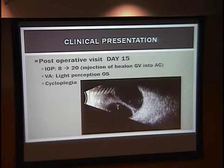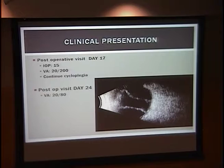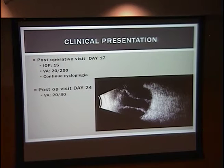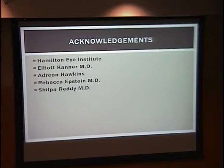On postoperative day nine, he was taken back for repeat drainage from the same sclerotomy sites. His IOP was 10 after injection of Healon into the anterior chamber, and visual acuity improved to 20/400. On postoperative day 15, he was light perception and his B-scan looked worse, so Healon GV was injected into the anterior chamber, bringing pressure from 8 to 20. On postoperative day 17, IOP improved to 15 and visual acuity improved to 20/200. By postoperative day 24, his visual acuity improved to 20/80.